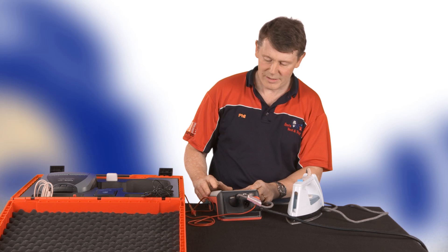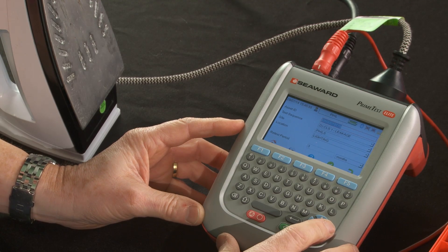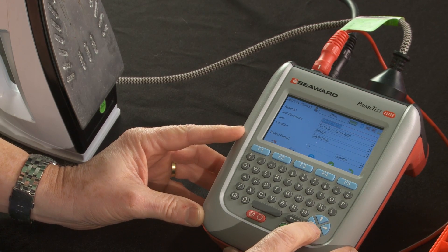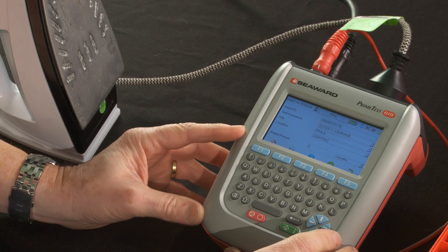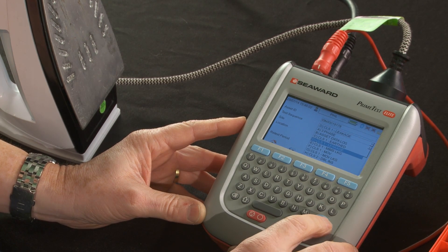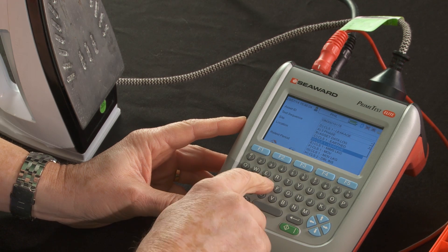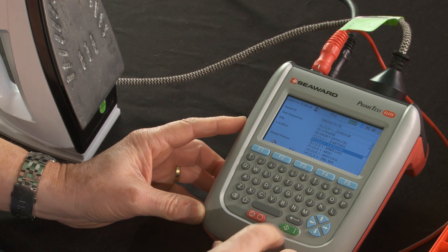On the tester, we're on the asset ID. We'll now select the test sequence, so that's a D. So that's our Class 1 leakage.